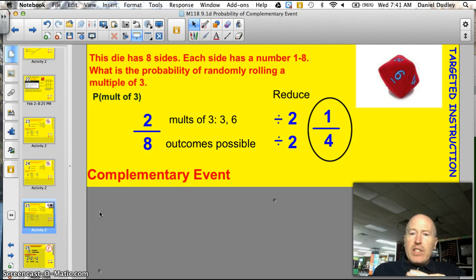Alright, let's try another one before I cut you loose. This die has 8 sides. Each side has a number 1 through 8. What's the probability of randomly throwing a multiple of 3? Alright, so here's my total possible outcomes when looking for the probability of a multiple of 3. I've got 8, right? 8 sides of the die. Multiples of 3 are 3 and 6. So I've got 2/8, or when I reduce that, I have a 1 in 4 chance of rolling a multiple of 3. So, what about the complementary event? You figure out what the probability of that complementary event is. Go ahead.